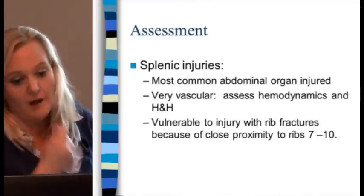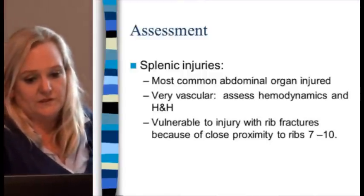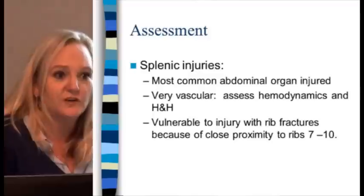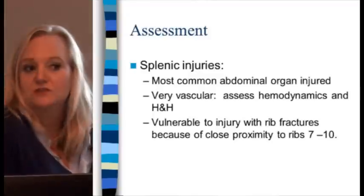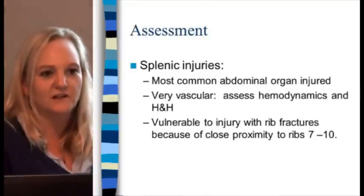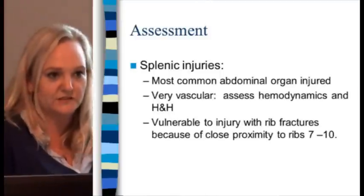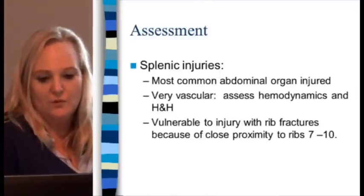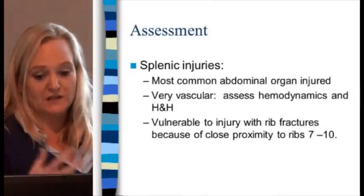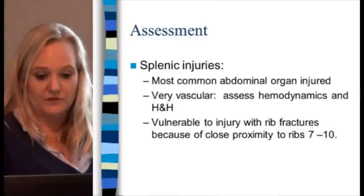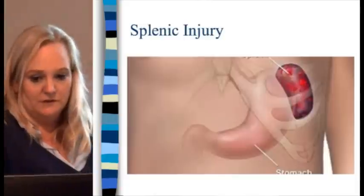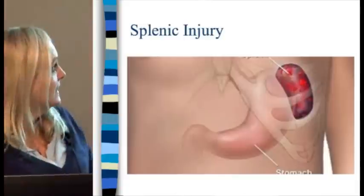Splenic injuries are probably the most common that we see, and the most common to go bad on you. The patient looks fine — I've had this happen to me twice. They're talking to you, and suddenly you're into a cold sweat, hypotension, tachycardia — splenic rupture right in front of your eyes, which is an OR emergency. It's the most common abdominal organ injury, very vascular. Assess hemodynamics and hematocrit. It's vulnerable to injury with rib fractures because of its proximity to ribs 7 through 10.